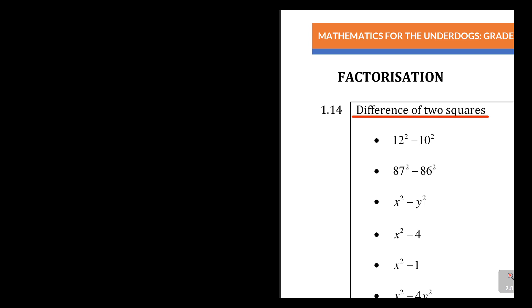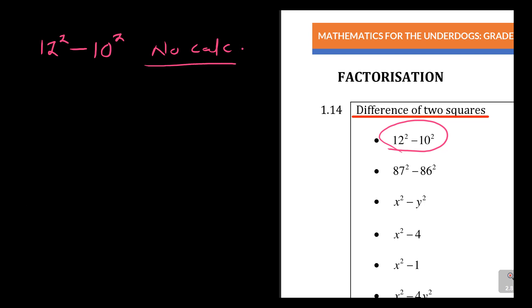Let's say they tell you to simplify without a calculator. For example, if I say solve 12 squared minus 10 squared without using a calculator, how do you go about it? It's not complicated. You can say 12 squared is 144 minus 10 squared which is 100, giving you 144 minus 100, and the answer is 44. But let's use the concept of difference of two squares.